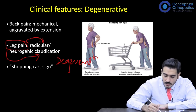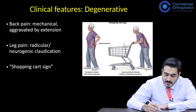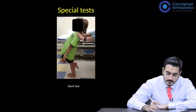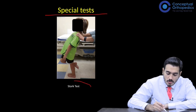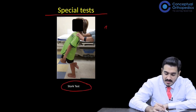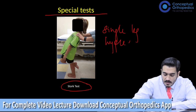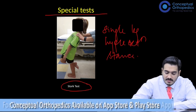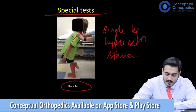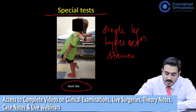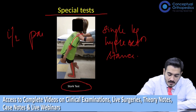There is a special test called the Stork's test — a single-leg hyperextension stance. The child is made to stand on a single leg and the spine is made to hyperextend. In such cases, ipsilateral pain is classic of spondylolisthesis.